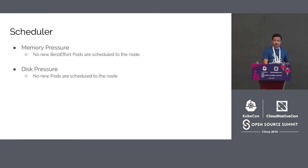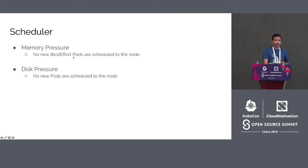Now that we understand node pressure conditions, let's see how they affect scheduling of future pods. The scheduler on the master is responsible for selecting nodes to run pods. If memory pressure condition is true, the scheduler will not schedule any new best-effort pods on the node. If disk pressure condition is true, the scheduler will not schedule any new pods to the node.